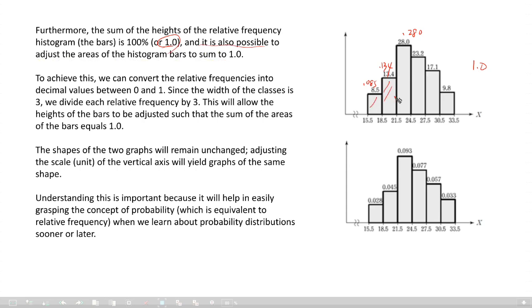The sum of areas can be equal to 1.0. To achieve this, we can convert the relative frequencies into decimal values between 0 and 1. Since the width of classes is 3, we divide each relative frequency by 3. This will allow the height of the bars to be adjusted such that the sum of areas of the bars equals 1.0.